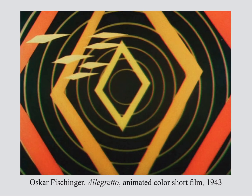Oskar Fischinger was a German artist who created some of the most striking examples of visual music or absolute animation. This is a still from Allegretto, completed in 1943 after a very long production. It's a three-minute animation synchronized precisely to music using only abstract forms. Fischinger is now regarded as the grandfather of the art of motion graphics.